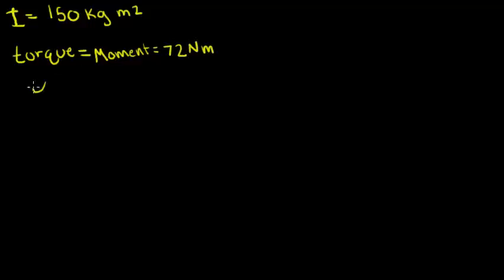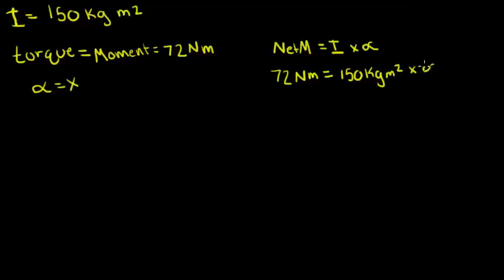We're trying to solve for angular acceleration. So we know an equation that uses all three of these things. That is, net moment equals moment of inertia times angular acceleration. So we're going to fill in what we know and then solve for angular acceleration. So our moment is 72 newton meters equals 150 kilogram meters squared times angular acceleration.